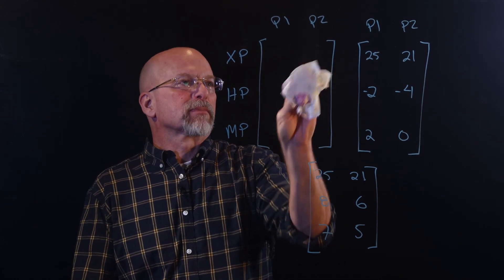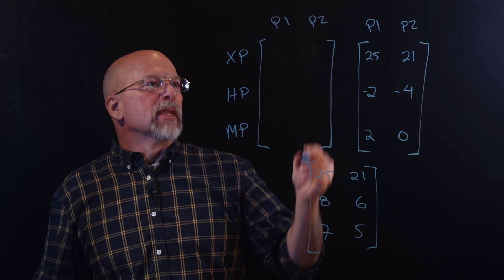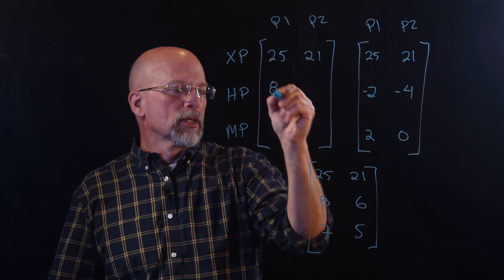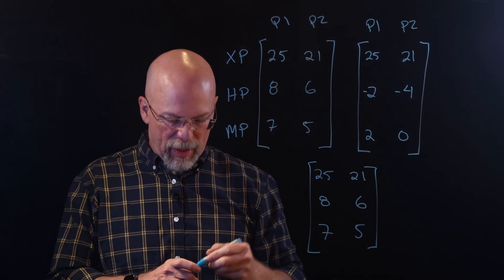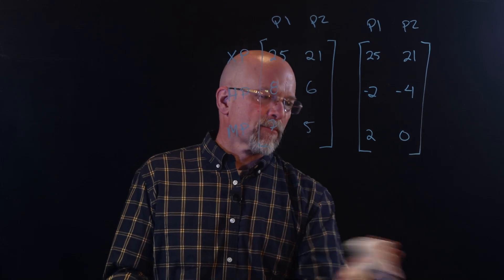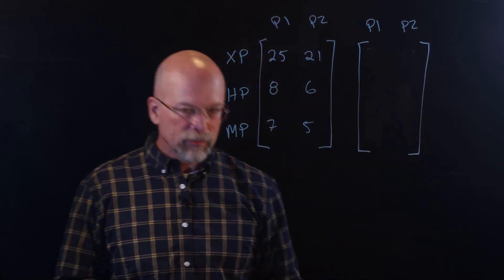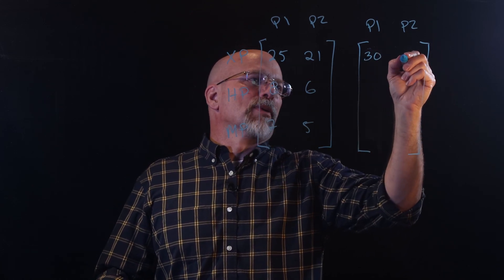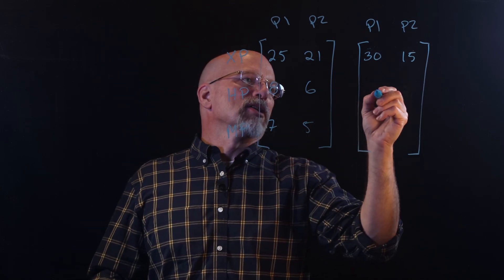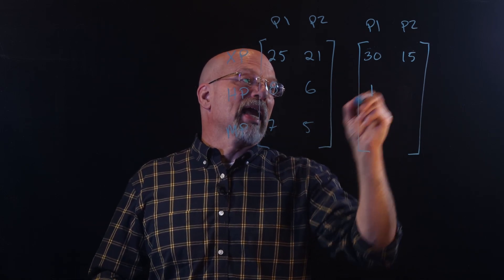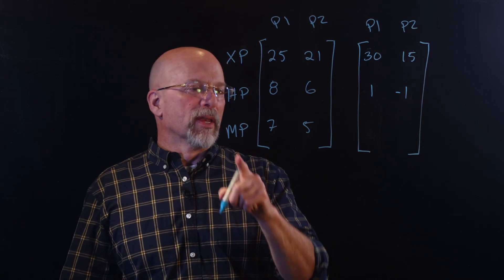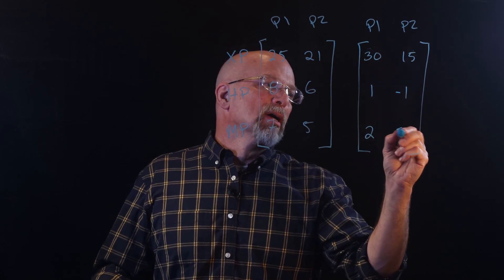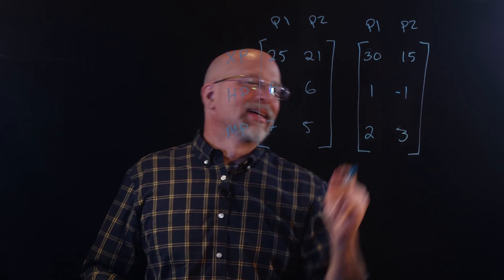Now, we're going to look at this. Let's move these values up to this new matrix. And we've got 25, 21, and 8, 6, and 7, 5. New level. This time, player one gains 30 experience points, but player two only 15. Health points, player one gains one, player two loses another one. And mana points, player one gains two more, and player two actually did something okay, got three more.